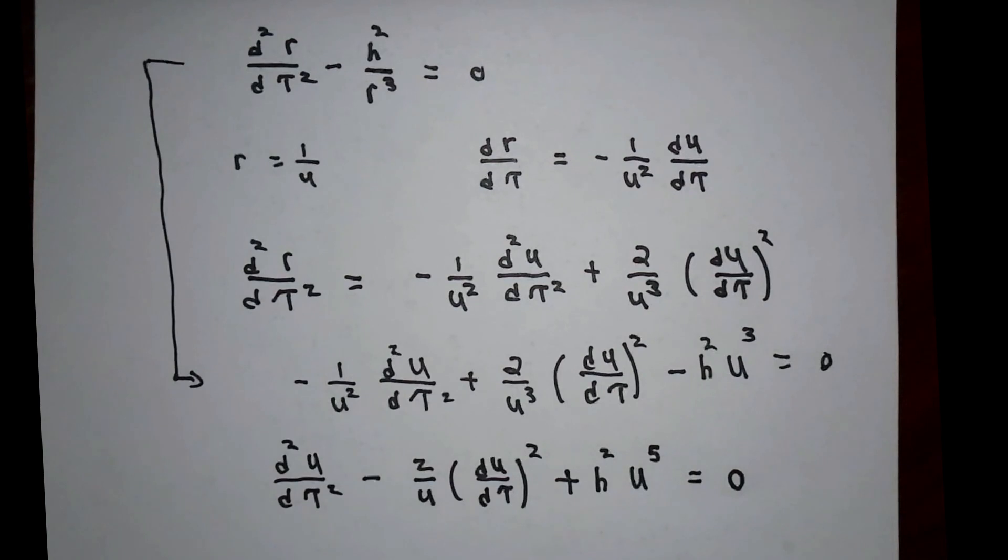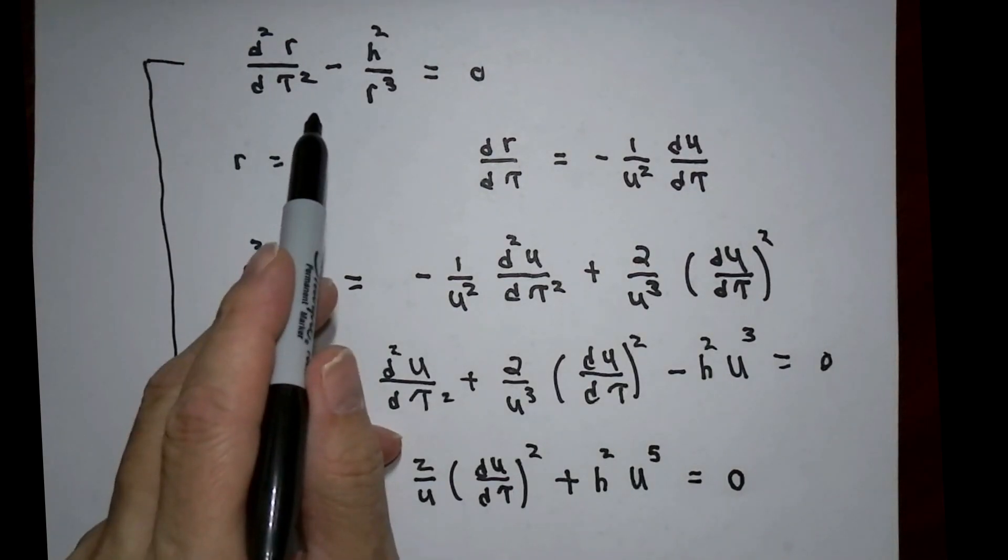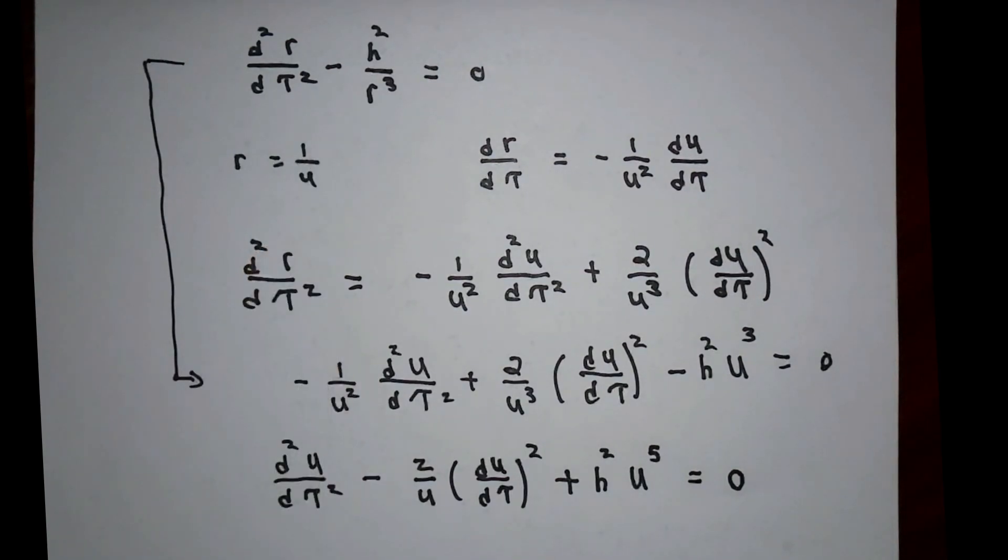A simplified version of this differential equation, then, is this equation. This is step one of two that we're going to have to do. The next step is to replace the independent variable tau by theta, so we're going to have to figure out what du d tau is in terms of theta, and also the second derivative of u.